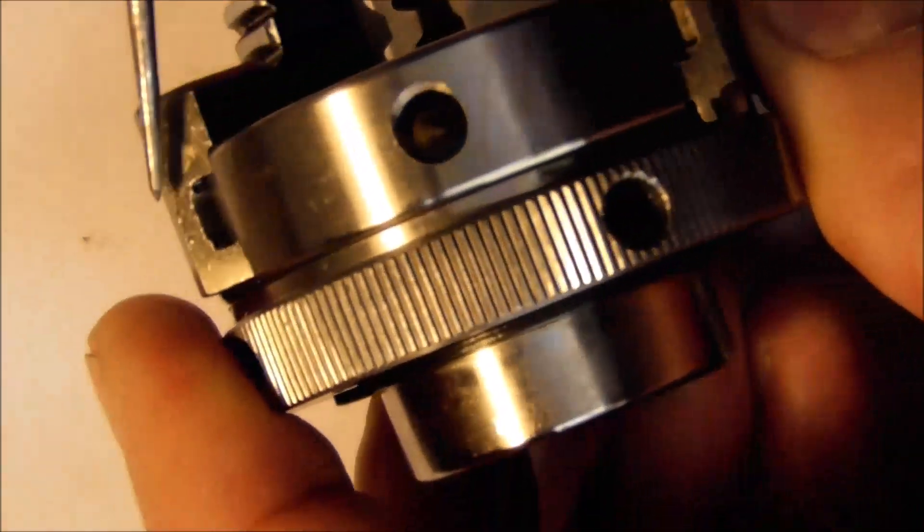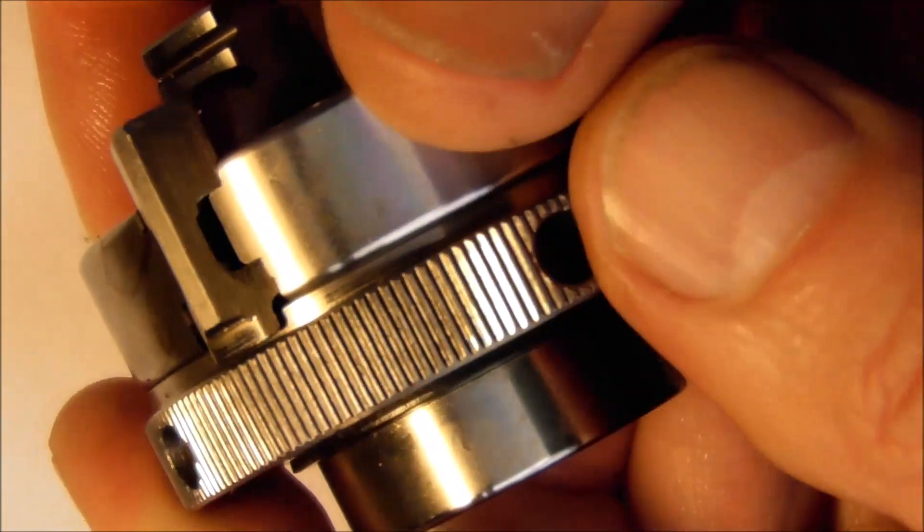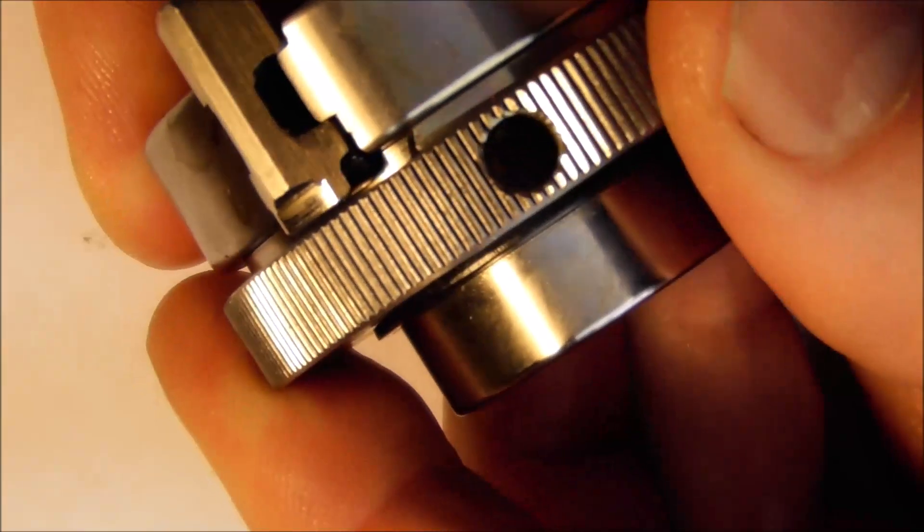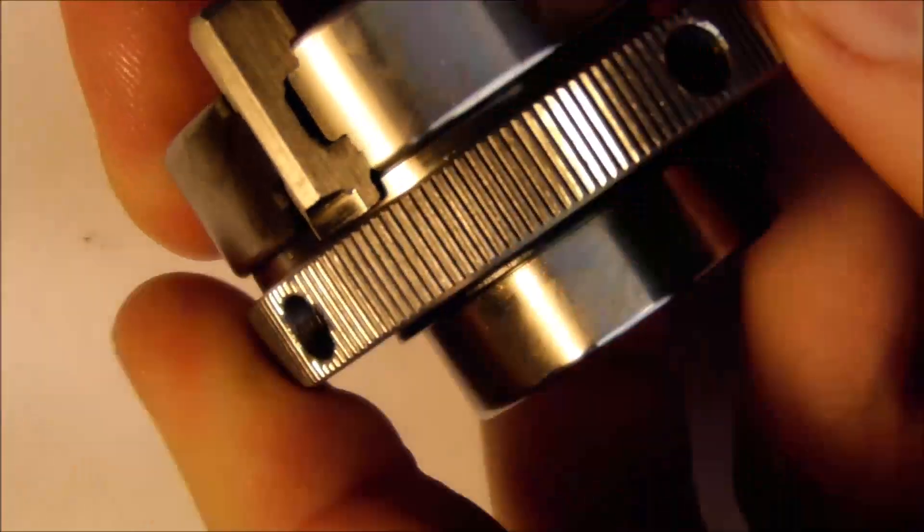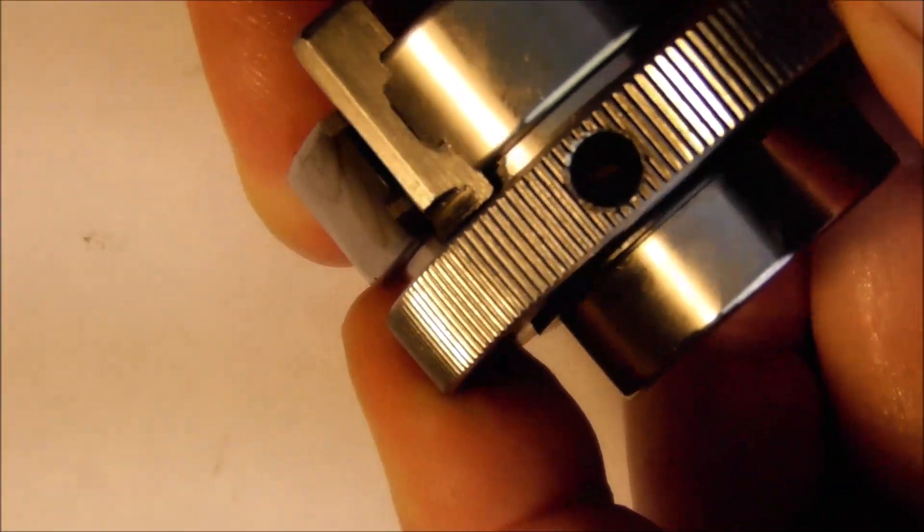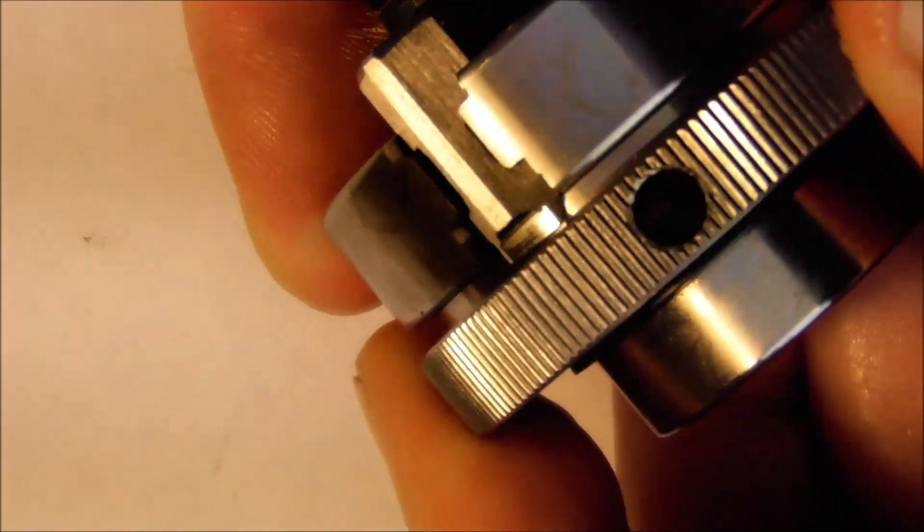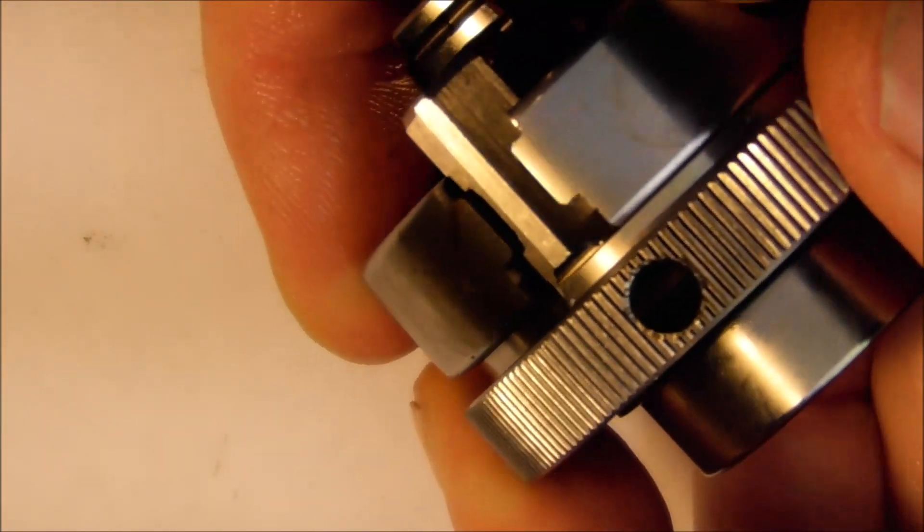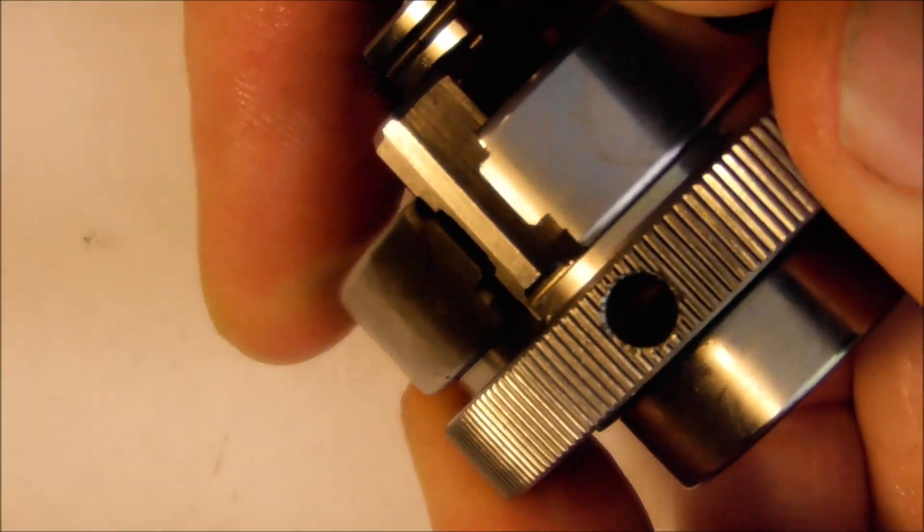The other problem is the scroll here contacts on—see if I can show it there, see the scroll coming around and contacting. Let's just take this down a bit. Okay, see there the scroll of this knurled part is contacting on the jaw scroll teeth, but it doesn't contact on them very well. There's only a very small amount of contact. If you have a look at a bigger chuck jaw, this is a much bigger chuck jaw—you can see there it doesn't look so obvious now.